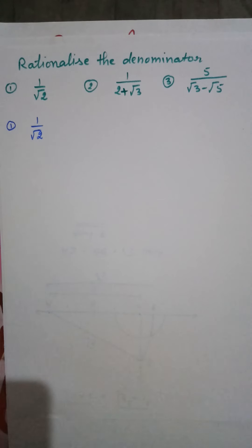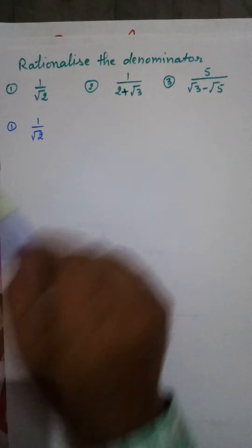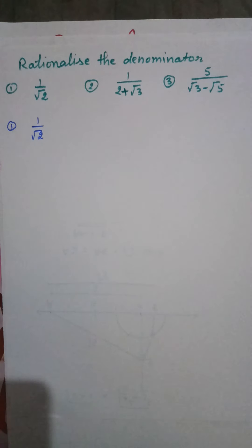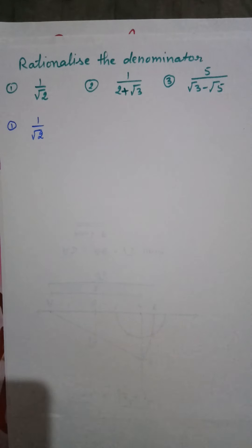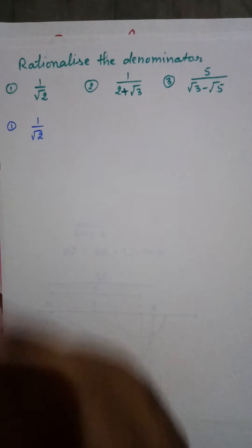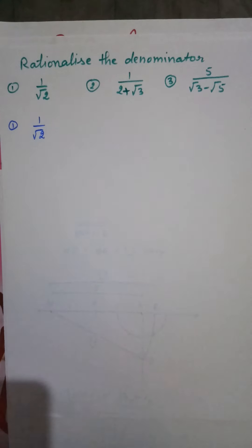Students, today I will tell you the topic: rationalizing the denominator. The question is 1 upon √2. The denominator contains a number in the square root. Rationalization means we have to convert √2 into a rational number. For this, we multiply the number in such a way that it becomes a perfect square number.